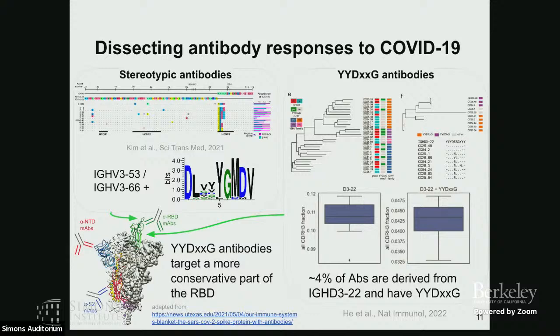We then decided to see what fraction of these antibodies exists in the population, and it was very pleasant to find that in unexposed people the fraction is four percent, which is extremely high. This means it is very easy to develop such antibodies, and that is a hope for future vaccine design. Even though the dominant stereotypic antibodies are practically useless, these alternative antibodies can be boosted, and with a slight change to the vaccine design, we can increase production of the good antibodies. These are derived from D gene D3-22.